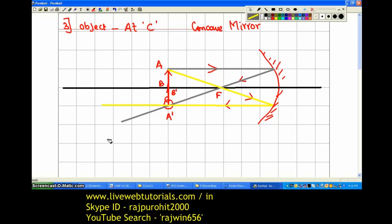Now we are going to discuss the characteristics of the image. The first thing is nature - you can see here the nature is real and inverted. Then second thing is position. The position of the image is also at C itself. And the size - you can see the size of the object and the size of the image in this case are one and the same. So when you are writing size, you will write size is same as that of the object.